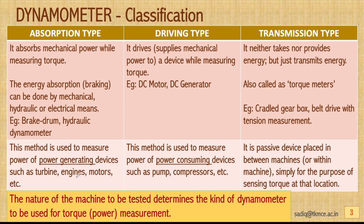Driving type dynamometers drive or supply mechanical power to a device while measuring the torque. Examples include DC motors or DC generators used as driving type dynamometers. This kind of dynamometer is used to measure power of power-consuming devices such as pumps and compressors.